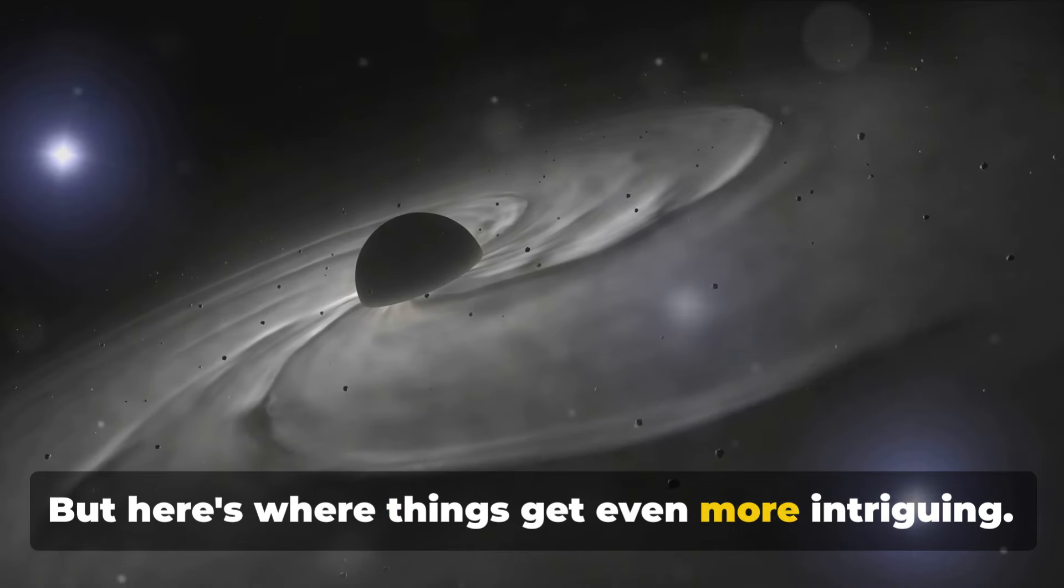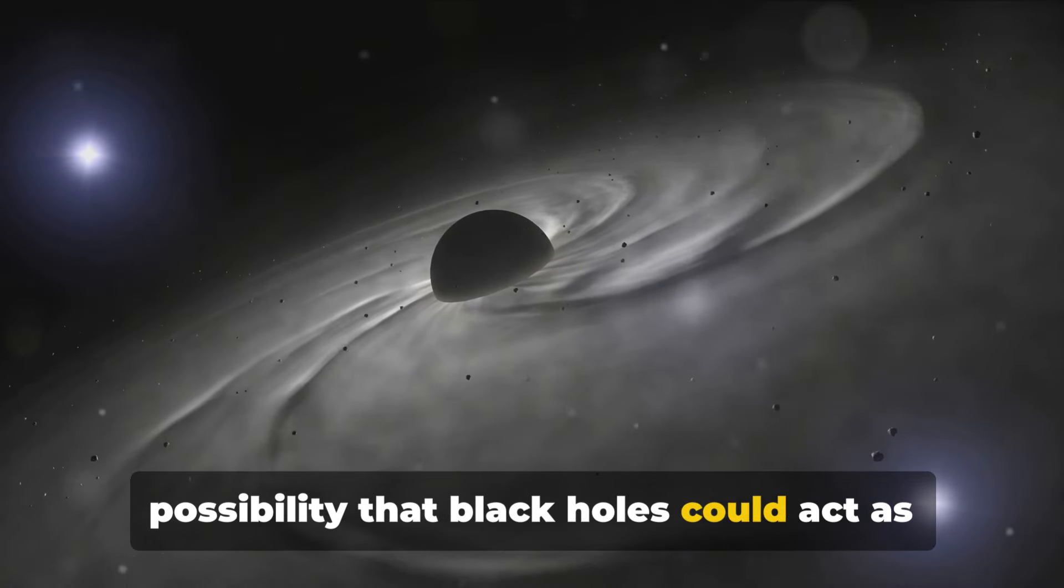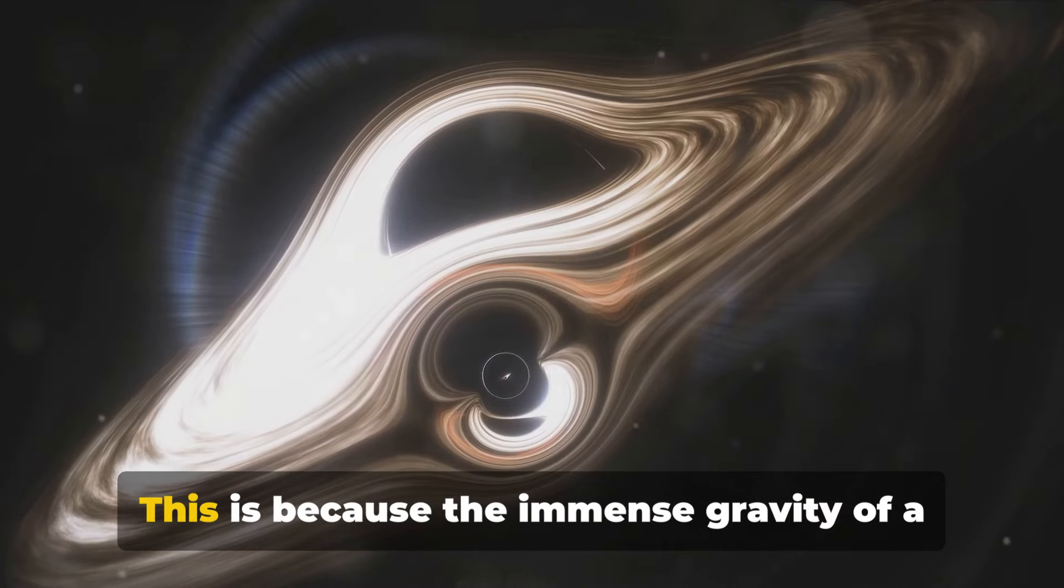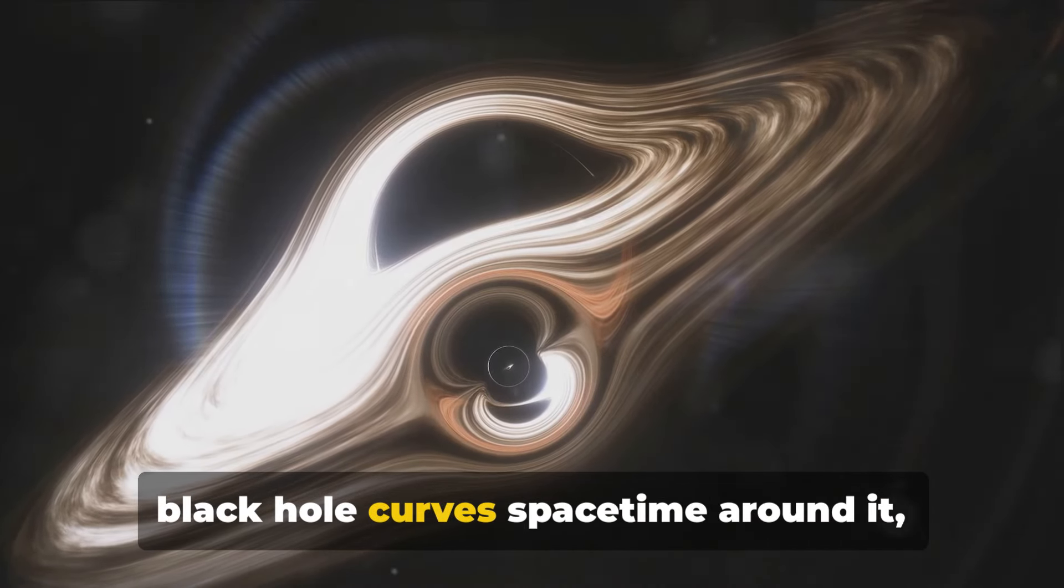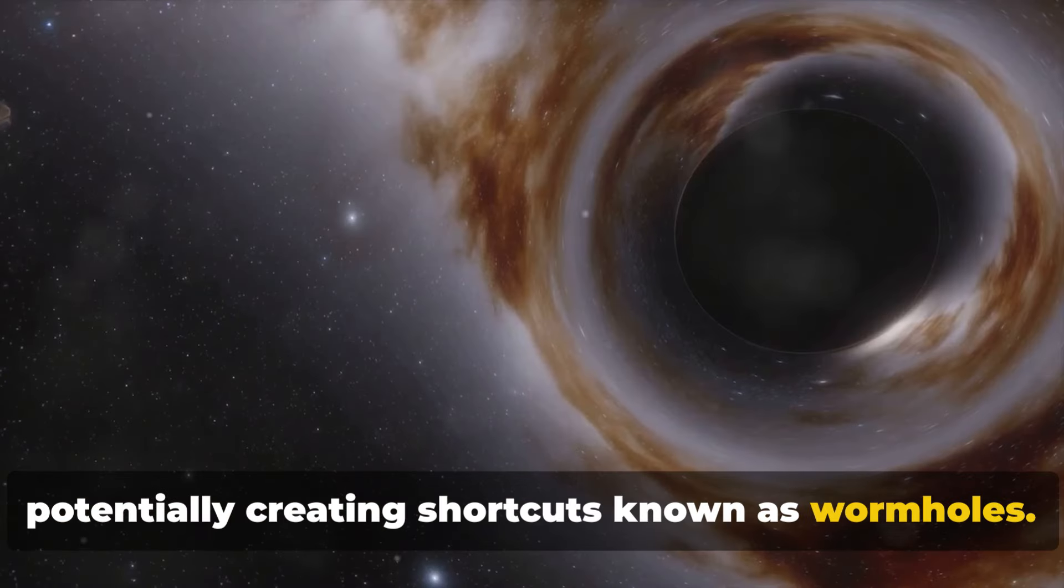But here's where things get even more intriguing. Einstein's theory also hints at the possibility that black holes could act as bridges to other points in space and time. This is because the immense gravity of a black hole curves spacetime around it, potentially creating shortcuts known as wormholes.